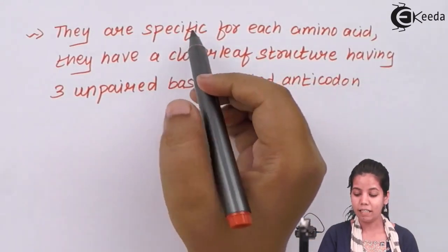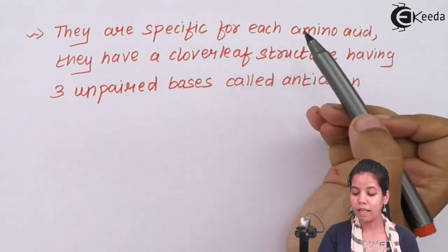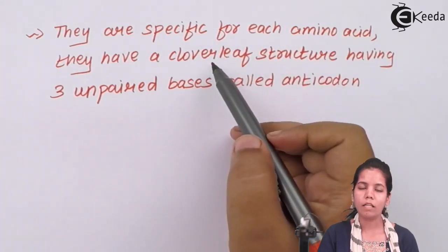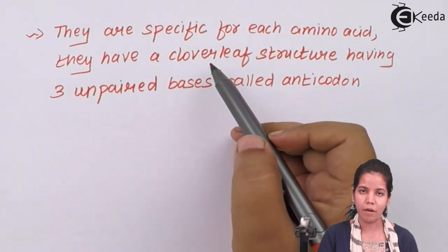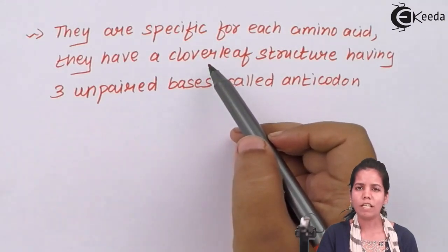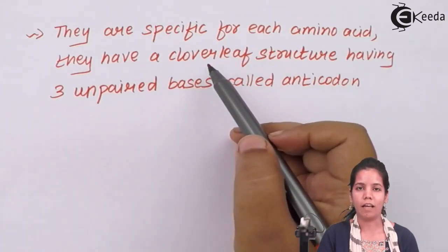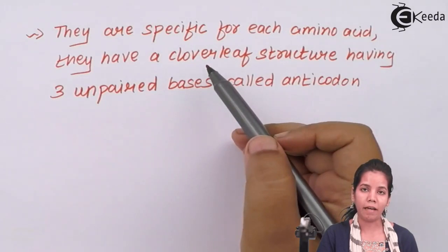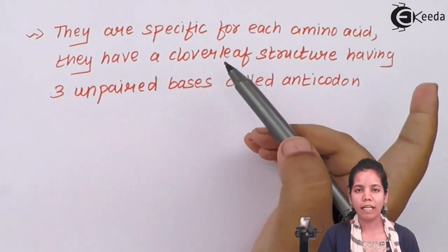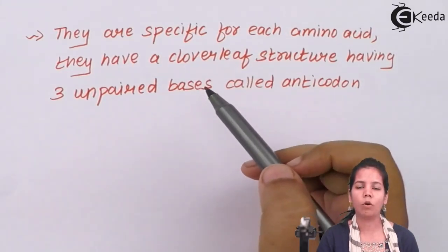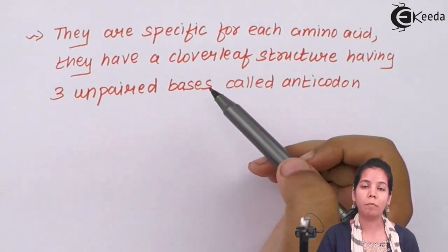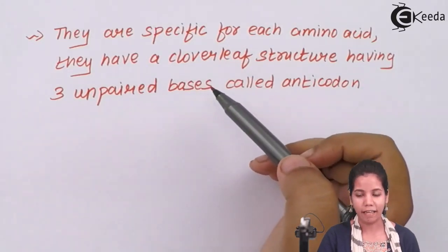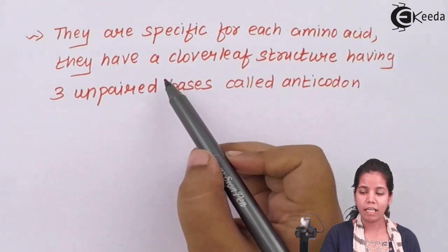Specific codons present on mRNA match with specific amino acids present on the tRNA. For example, if the start codon AUG is present on mRNA, then the tRNA will have a matching anticodon. The structure of tRNA is called the cloverleaf structure, which is somewhat synonymous to the alphabet T.